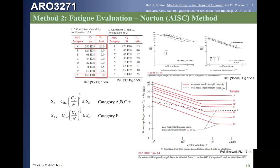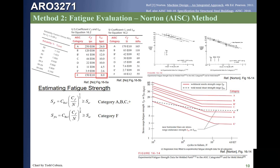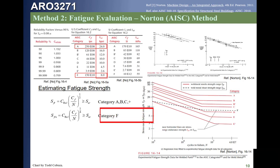If values exceed those thresholds, we can calculate the actual life. To use this equation, we also need the reliability factor. This reliability factor differs from what we used earlier — for welds, a reliability factor of 1 is associated with 95% reliability rather than 50%, due to the conservatism built into the analysis. Other reliability values are shown in the table. We insert the reliability value from the table and the coefficient C_F to compare against the endurance limit.